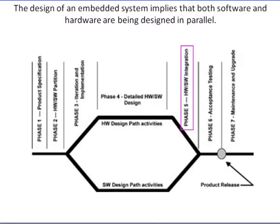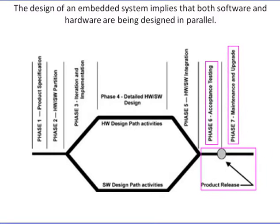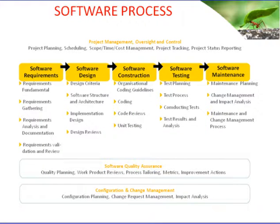Validation answers the question: did we build the right thing? Validation aims to confirm that requirements in areas such as functionality, performance, and power are satisfied. This concludes that the architecture is correct and the system is performing optimally. Phase 6 is product testing and release — once hardware and software are validated and verified, confirming the working system meets design requirements, it can be released to the customer.